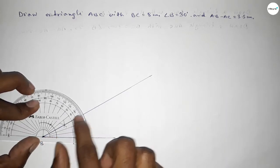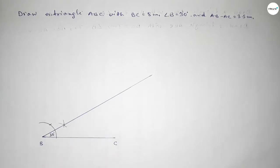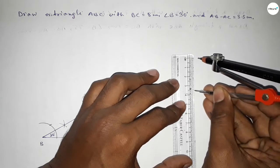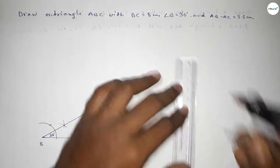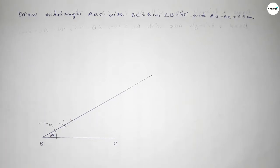Now taking a length 3.5 centimeter by using compass by this way and putting the compass here and cut here and taking point D. So BD equal to 3.5.